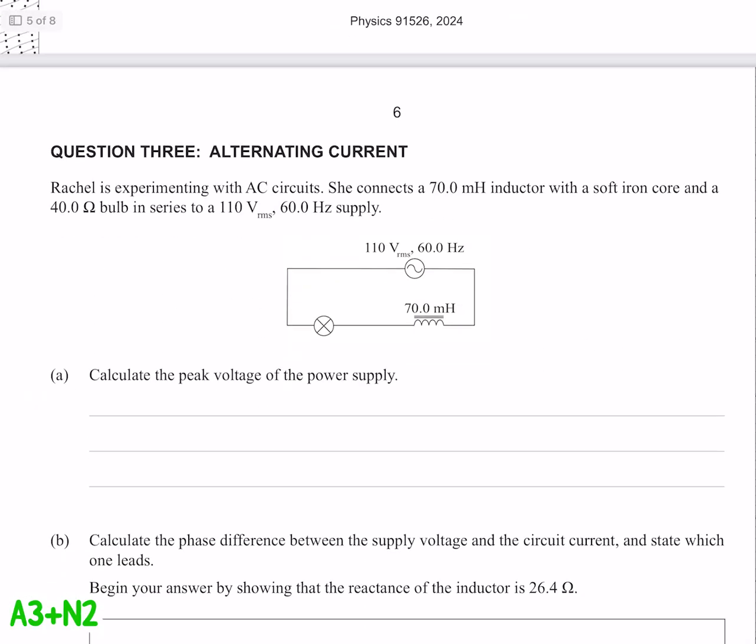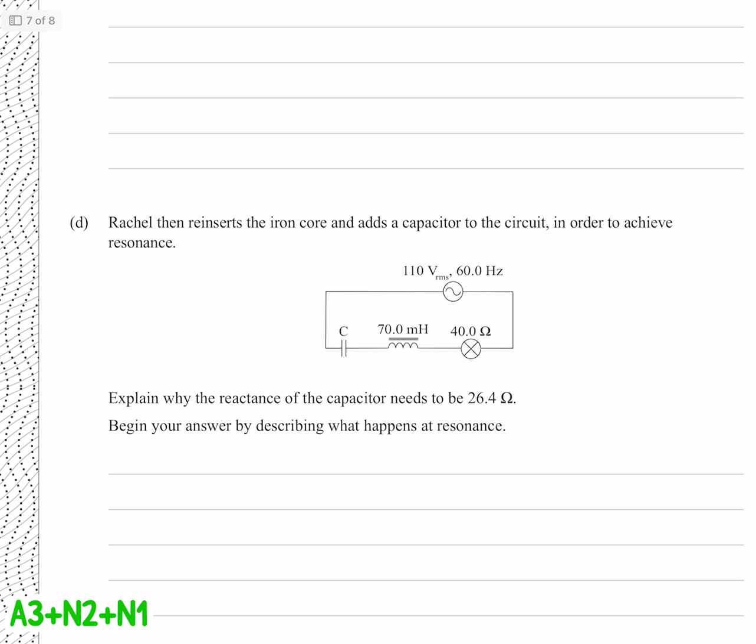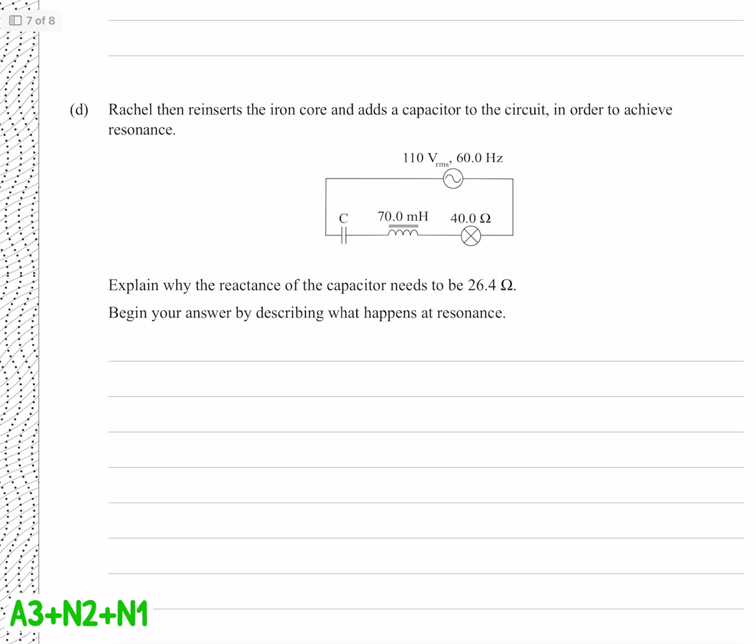Moving on to question 3. The inductor has a soft iron core. Explain what Rachel would observe in the brightness of the lamp when she slowly removes the iron core from the inductor. Less core, less inductance, less reactance, less impedance, which means more current, and therefore brighter. Rachel then inserts the soft iron core and adds a capacitor to the circuit in order to achieve resonance. Explain why the reactance of the capacitor needs to be at 26.4 ohms, probably not going to do that. Begin your answer by describing what happens at resonance. Well the current is at its biggest.